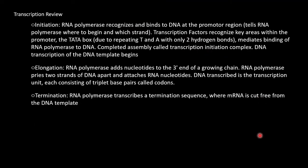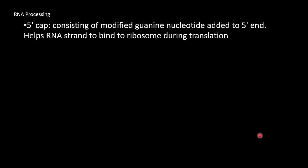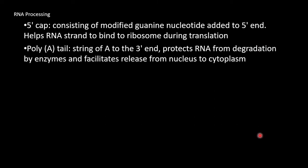Now it's RNA processing. Before RNA can actually leave the nucleus, it must be processed so it will work properly. A 5 prime cap is added. It consists of a modified guanine nucleotide added to the 5 prime end. It also helps RNA strands to bind to ribosomes during the translation process. A poly-A tail is added as well. This is a string of adenine added to the 3 prime end and protects the RNA from degradation by enzymes, and it facilitates the release from the nucleus into the cytoplasm.